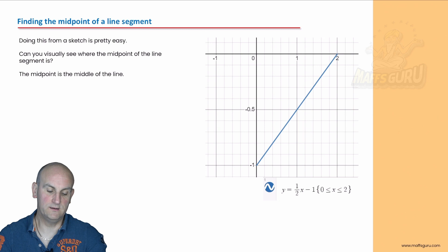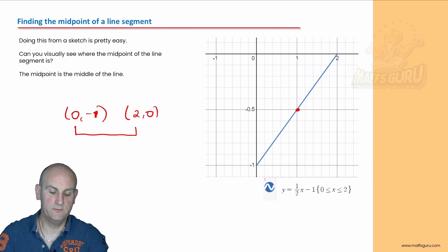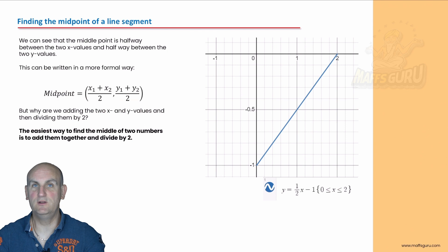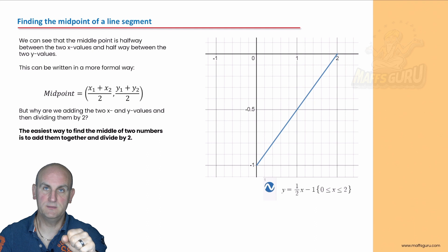So how do we find the midpoint of the line segment? Again, really really easy. With points (0, −1) and (2, 0): if I know my x values I go halfway between them, and if I know my y values I go halfway between them. The easiest way to find the middle of two numbers is to add them together and divide by 2.